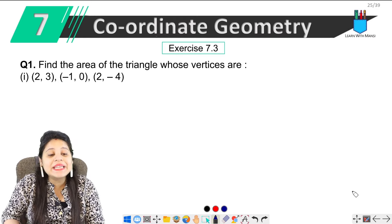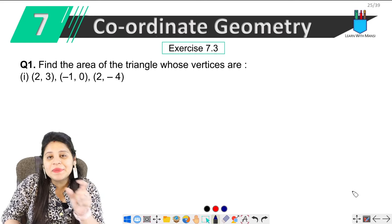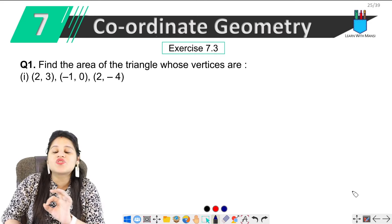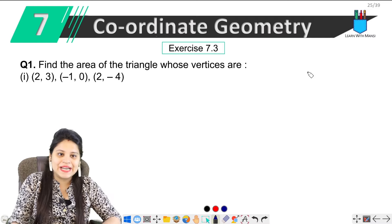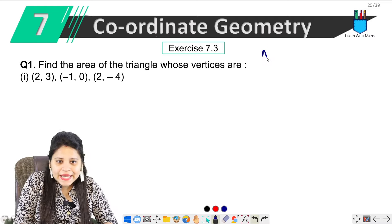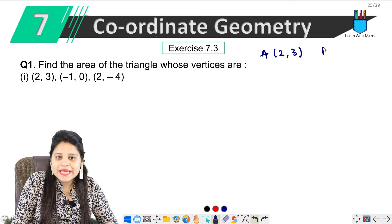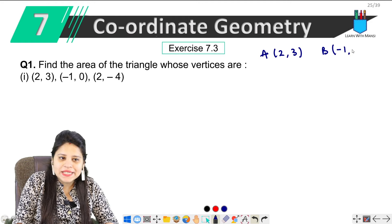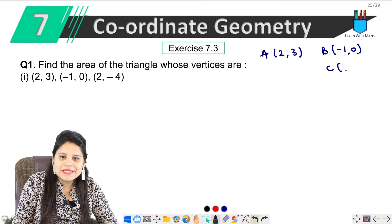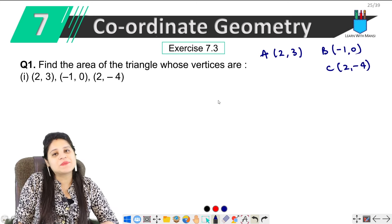First question is, find the area of the triangle whose vertices are. Now we have 3 vertices here. We are going to start with the area of this triangle. My first coordinate here is A(2, 3). Then we have taken B(-1, 0). And we have taken C(2, -4).